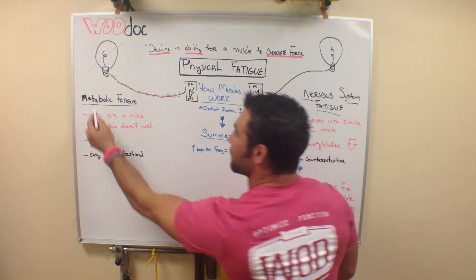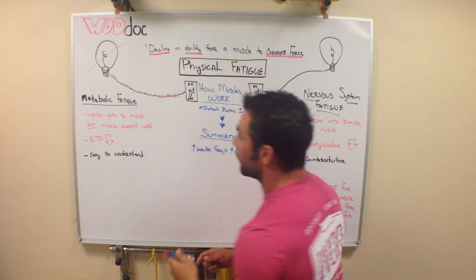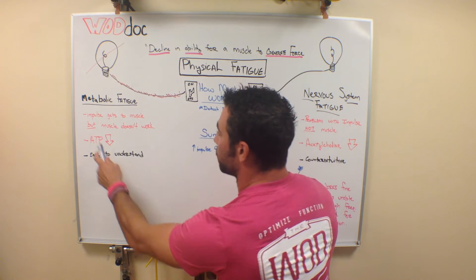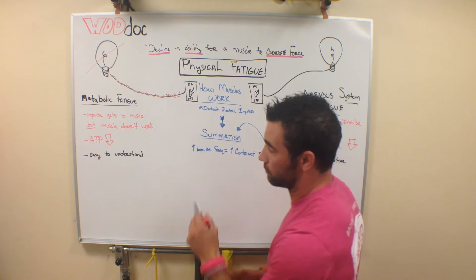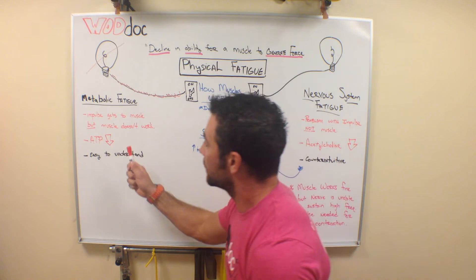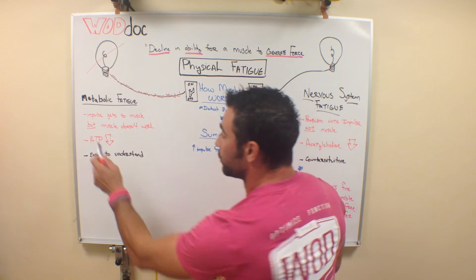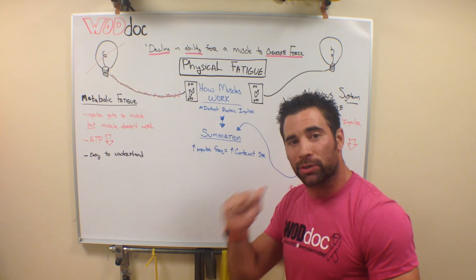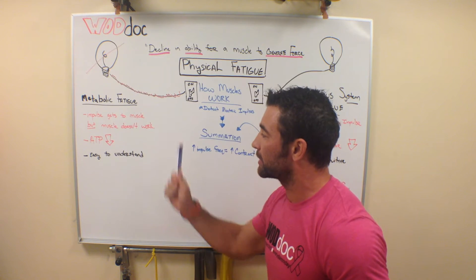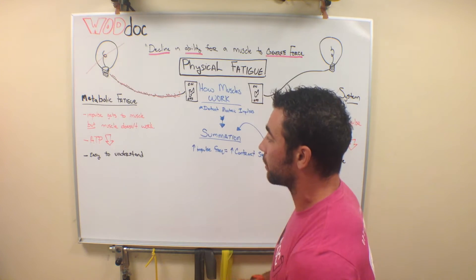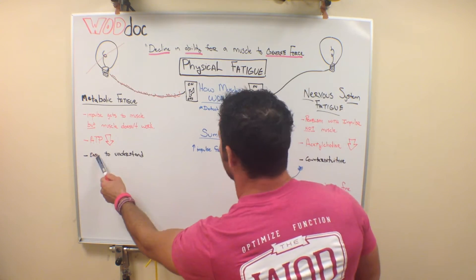that's metabolic fatigue. The impulse gets to the muscle, but the muscle itself doesn't work. This is normally, 99.9% of the time, a problem with the substrates. We use ATP in this example because it's the most important substrate we have here. Without ATP, the muscle itself can't contract. I'm going to come back to this part right here.